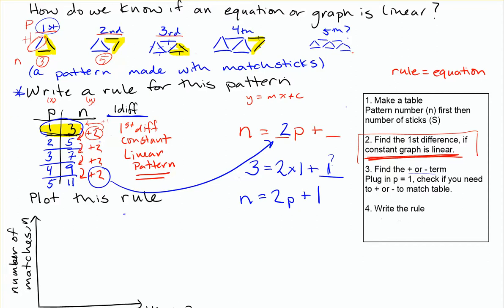We filled that in, we found that our first difference was constant, plus 2 every time. So it was going to be a linear pattern. So we started with n is equal to my first difference times the pattern number, plus something I wasn't sure of. And looking in, I know that I need a plus 1 to get my pattern to actually match what's in my table